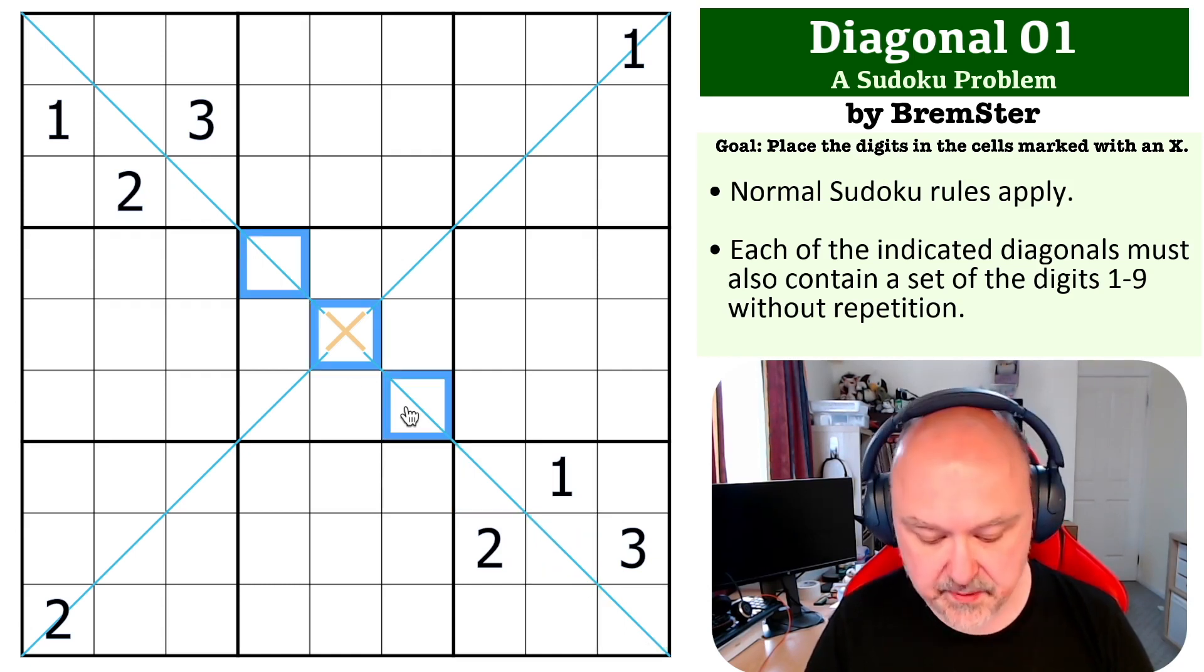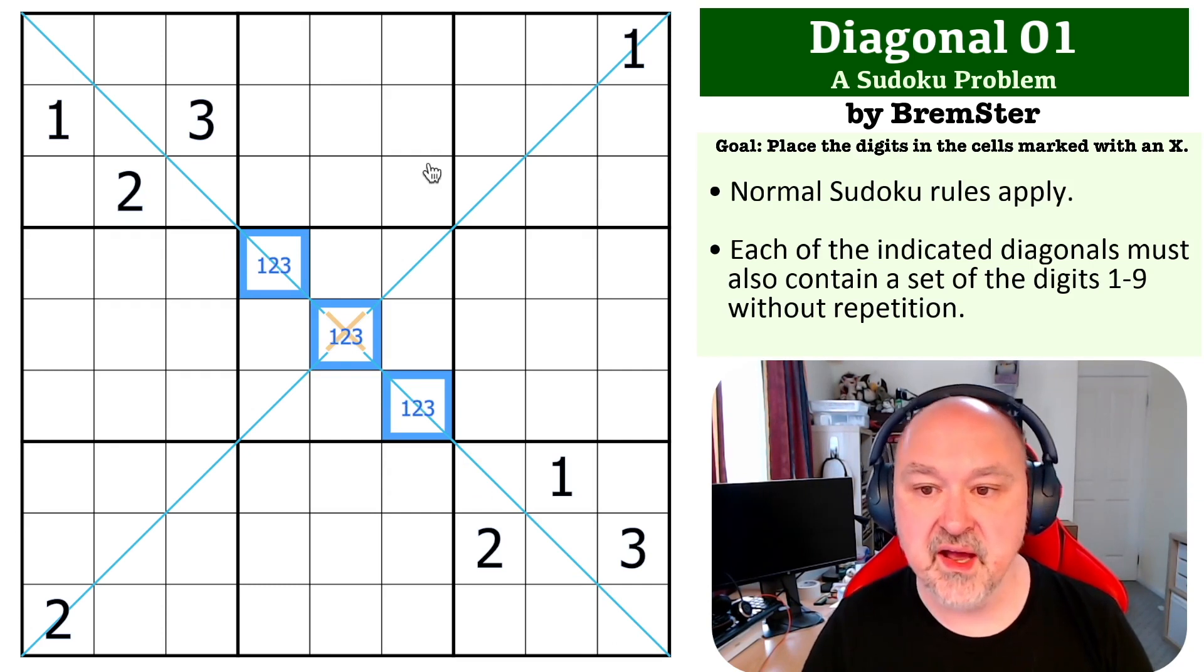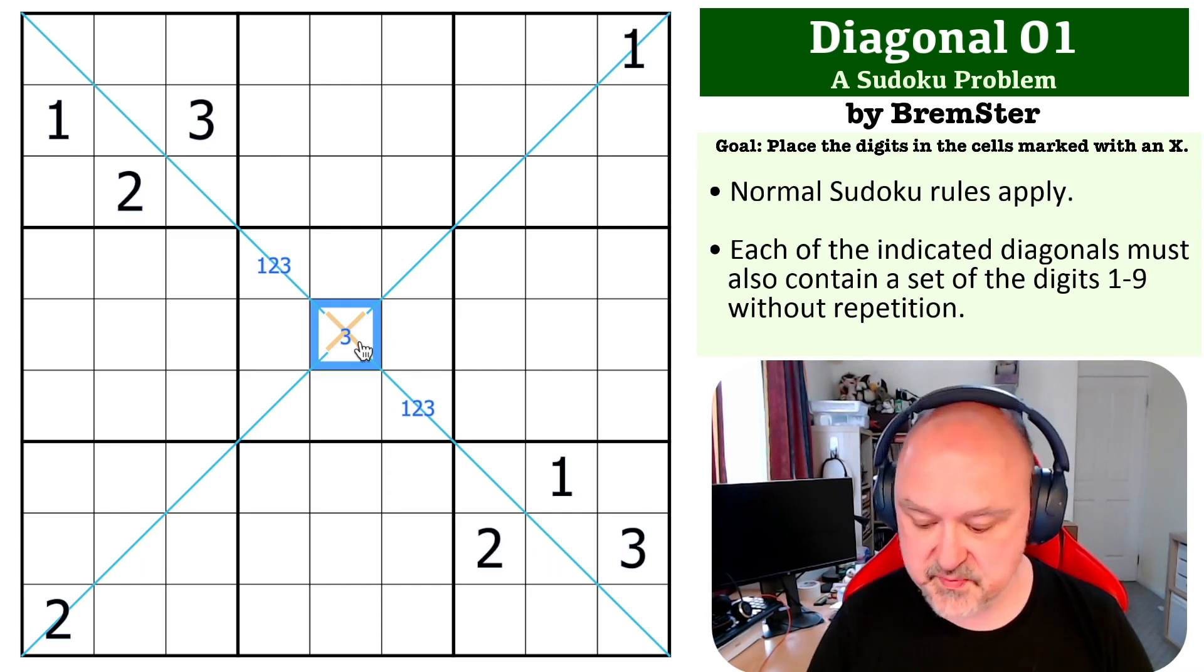So these cells right here must contain the digits one, two, and three. However, this diagonal already has a one and a two on it, so you cannot put a one or two here, and this becomes a three.